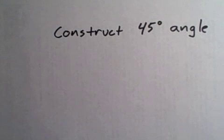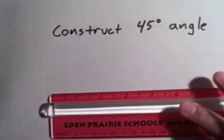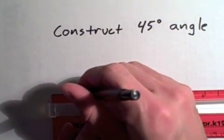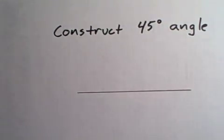To construct a 45 degree angle, first you need to draw yourself a line and put a point on that line. That point will be the vertex of your angle.